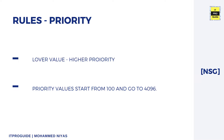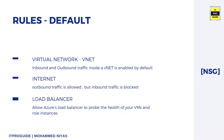When you create a new NSG rule, you have to give a number called a priority number. Lower the number, higher the priority. The priority value starts from 100 and goes to 4096. Rules with a priority closest to 100 will be enforced and will be effective. When you create a new NSG in Azure, by default there are some rules available.